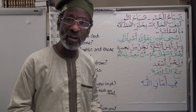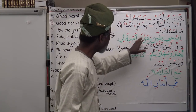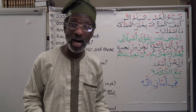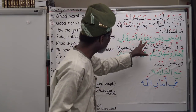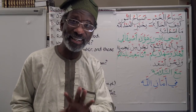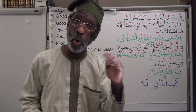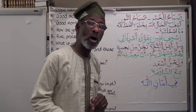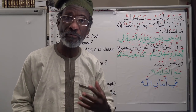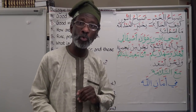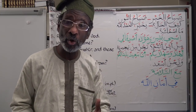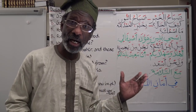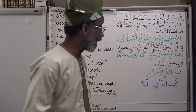'Wa haa ulaa'i' — and these are. 'Haa ulaa'i' is the ismo al-ishara, meaning demonstrative pronoun. It is plural and specifically used only for humans, regardless of gender — three or more. 'Wa haa ulaa'i asdiqaa'i' — and these are my friends. 'Asdiqaa'' is the plural of male friend 'sadeeq'.